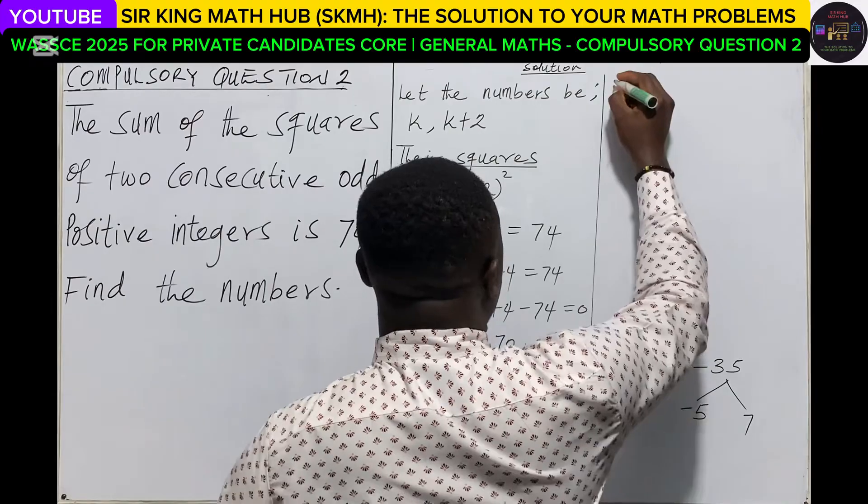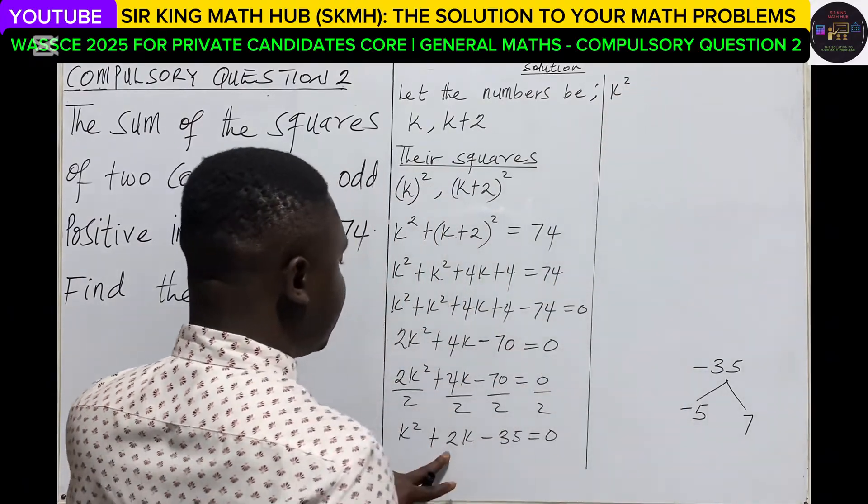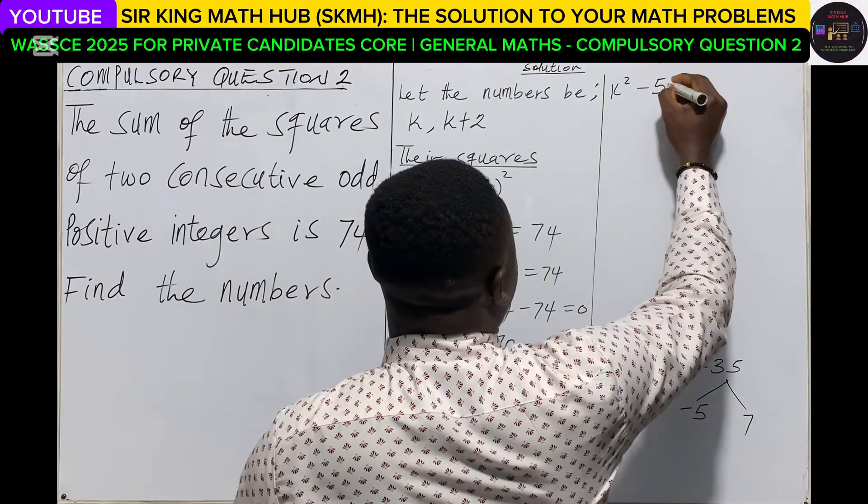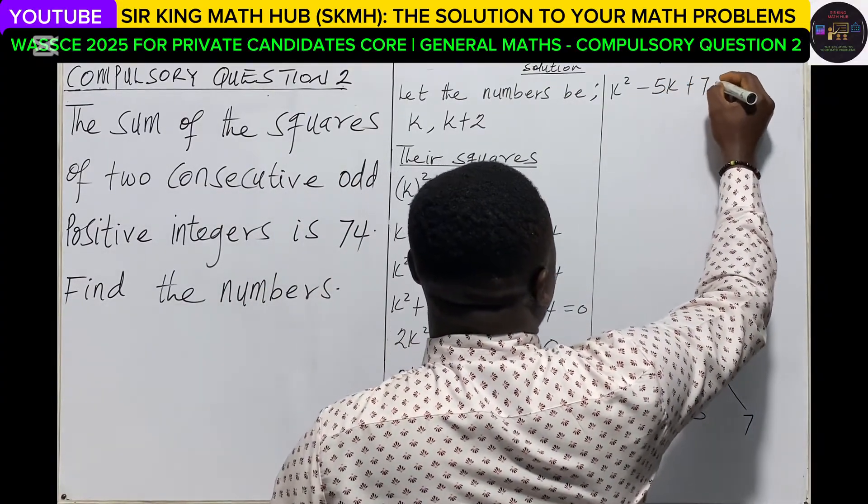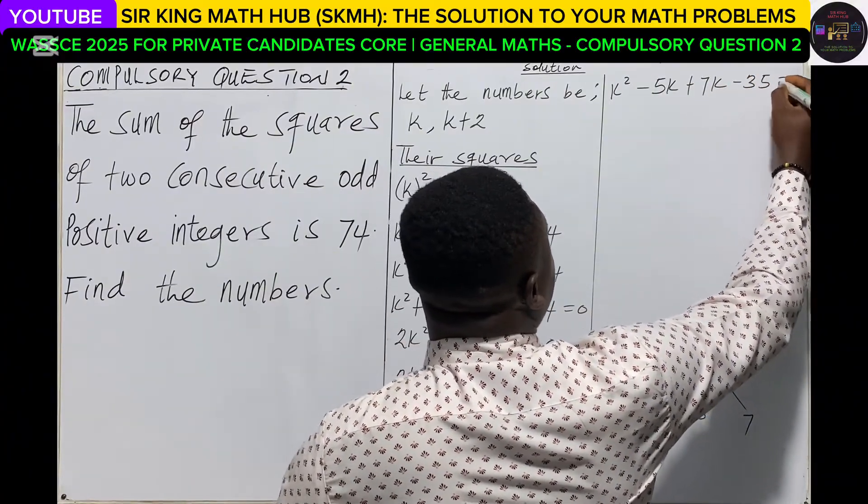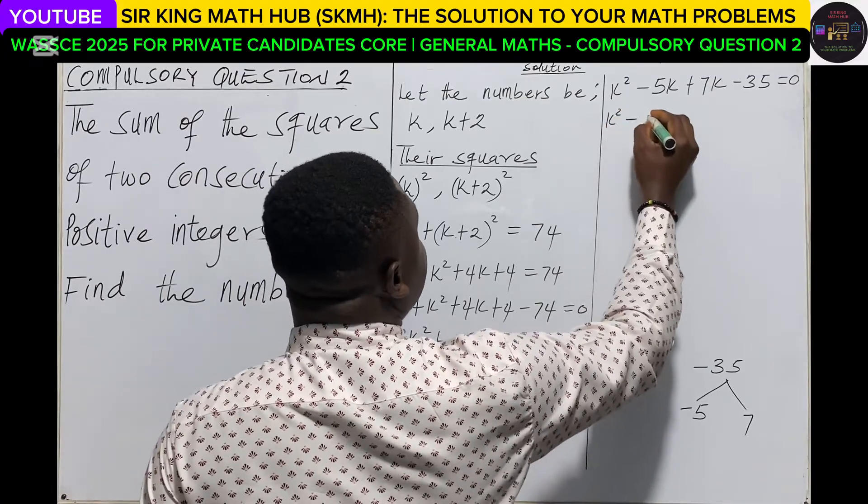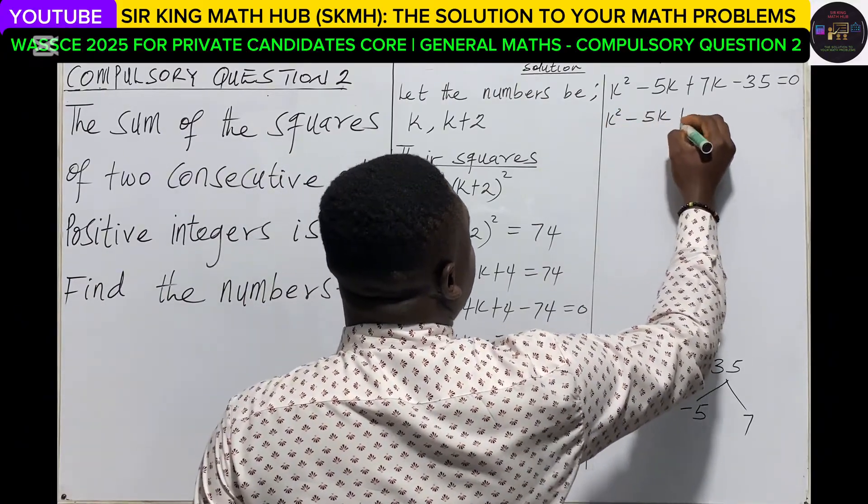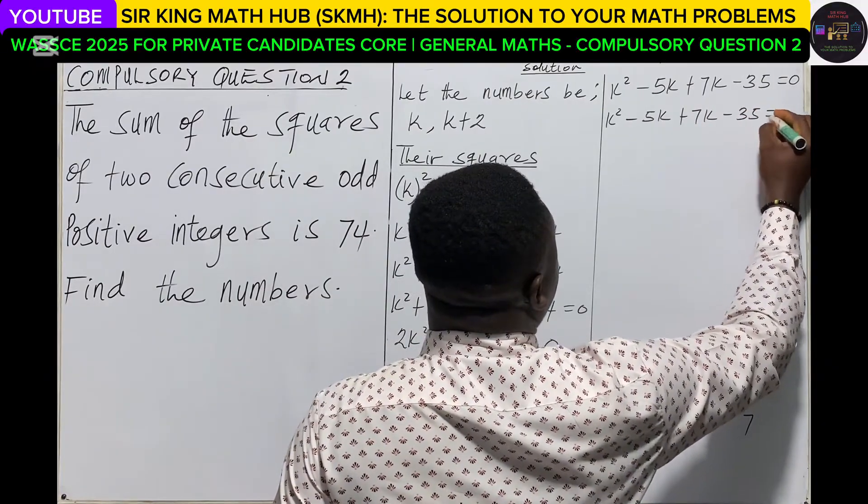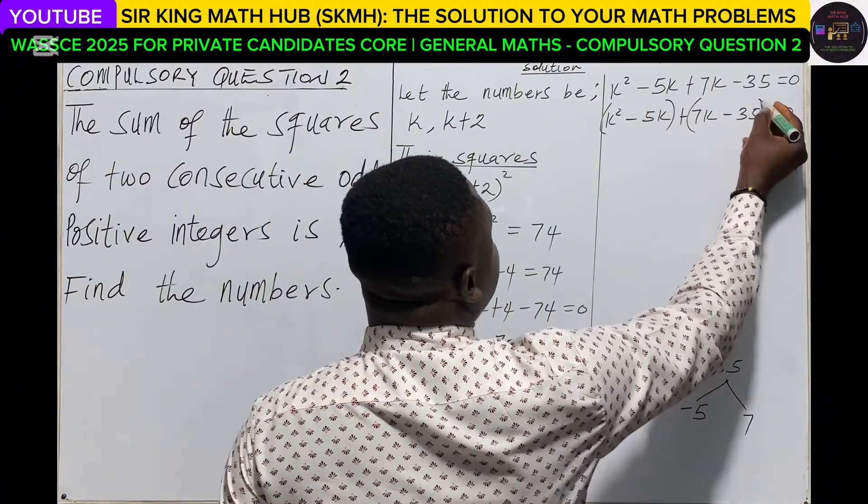So now we are breaking them into factors. K squared, so instead of 2k, replace that with minus 5k plus 7k minus 35 is equal to 0. So we can group them, first two and then the last two.